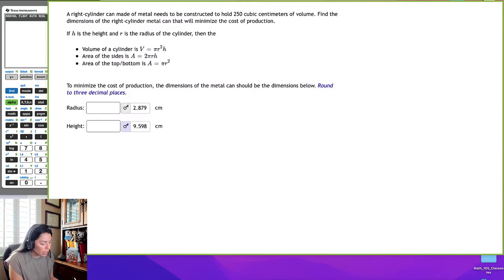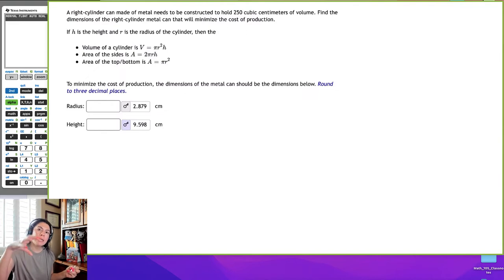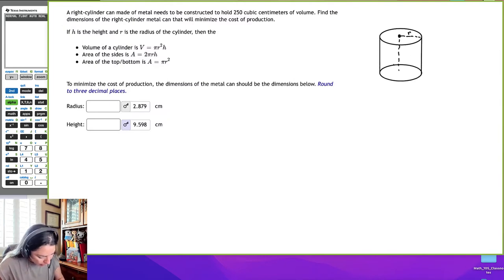Alright, so if we need to minimize the cost of production of producing the metal, let me draw a picture. I'm not trying to minimize the cost of the volume, right? Because I already know I need to fit 250 cubic centimeters in there of soup or liquid, whatever it is. What I need to do is build the metal can. And eventually what I want to do is fill it up. I'm going to fill it, but I need to make the can.